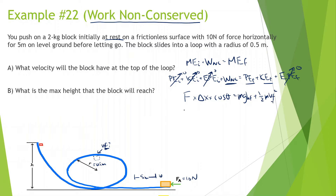We're looking for v final. Force 10 newtons times displacement 5, going the same direction so cosine is 1, equals mass 2, gravity 10, times height 1 meter (radius times 2), plus one-half times 2 times v final squared. So 50 minus 20, take the square root, and we get 5.48 meters per second at the top of the loop.